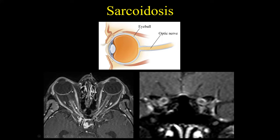This case has a similar finding — diffuse enhancement involving the dura, the sugar-coating enhancement — but notice that the caliber of the optic nerve has been preserved. When you see something like this, this is more leptomeningeal spread. In this particular case it was sarcoidosis, but we can see it in other etiologies including lymphoma, leptomeningeal metastasis, and also tuberculosis. If you come from a part of the world endemic with tuberculosis, realize that tuberculous meningitis can give a similar appearance.